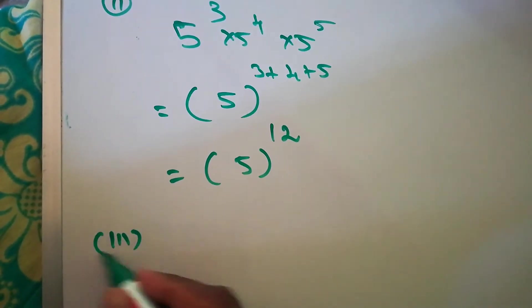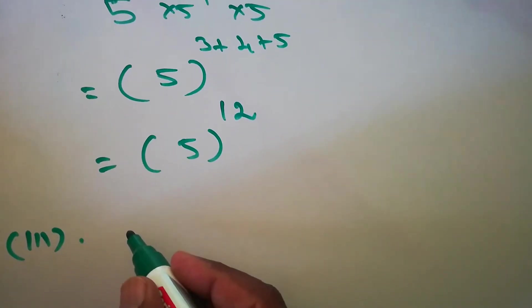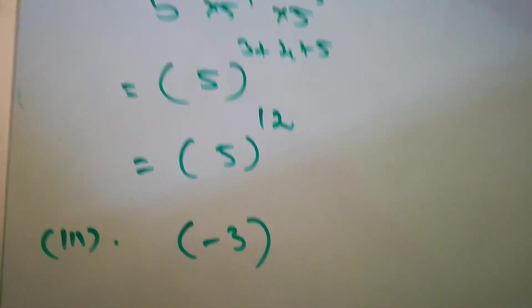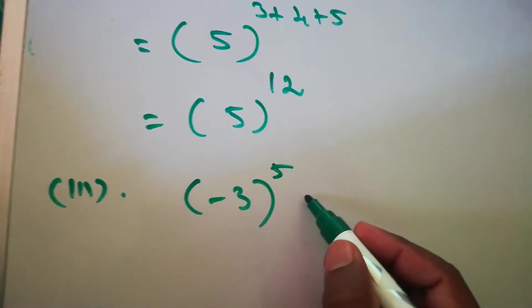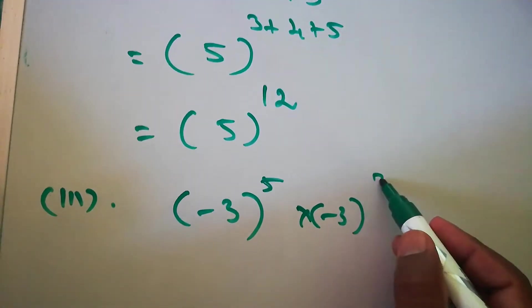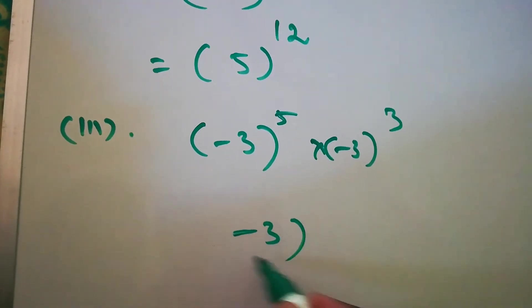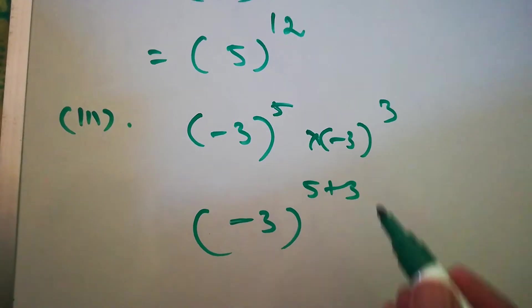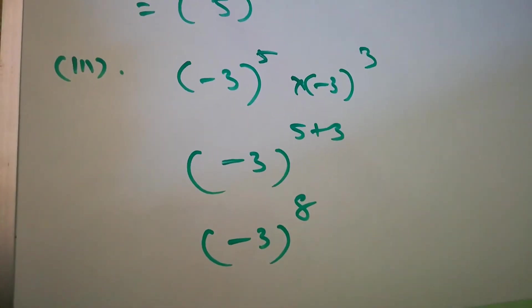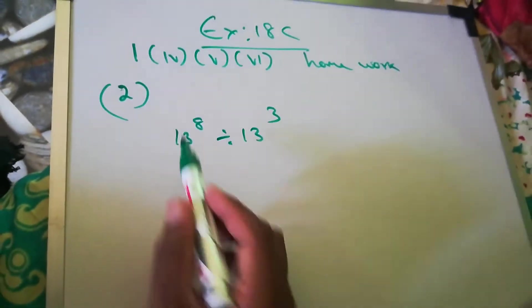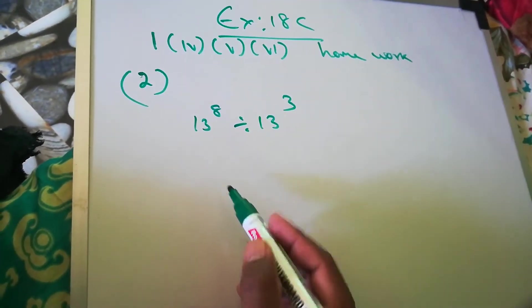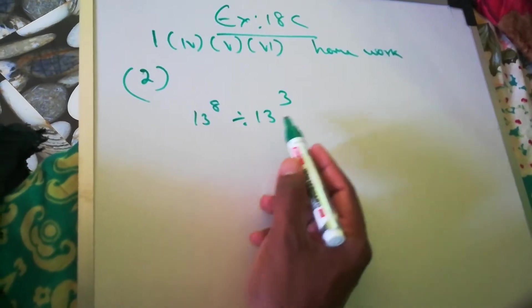The third question: (-3)^5 times (-3)^3. The base is the same (-3), so the power is 5+3=8. Therefore the answer is (-3)^8. Questions 4, 5, and 6 are homework. Now question number 2: 13^8 divided by 13^3.